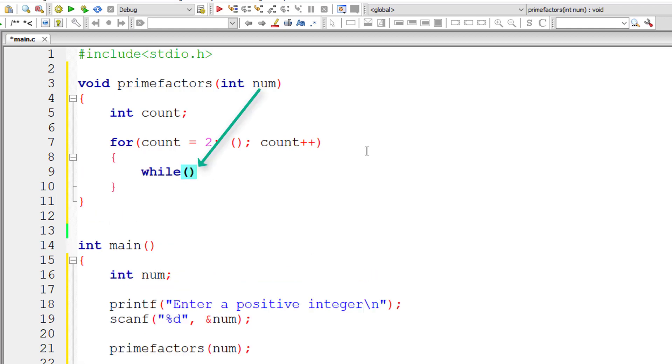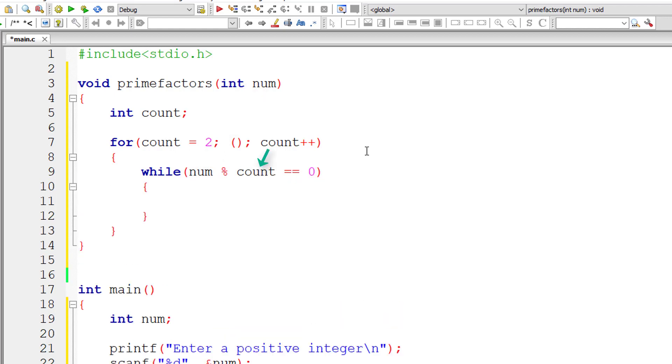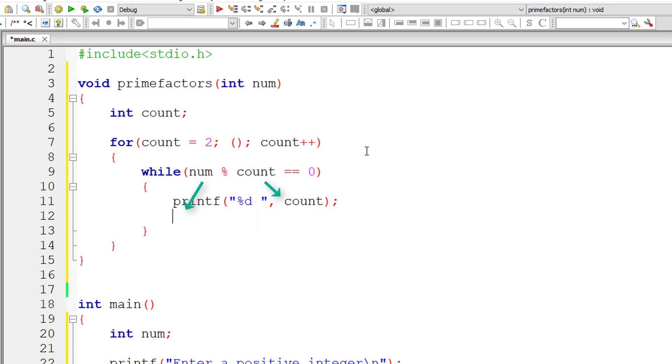Now inside for loop, I'll check if number modulo division count is equal to 0 inside a while loop. Inside this, if it's true, I'll print the value of count and then reduce the value of num by writing num is equal to num divided by count. So this while loop keeps on iterating until num modulo division count is not perfectly divisible.